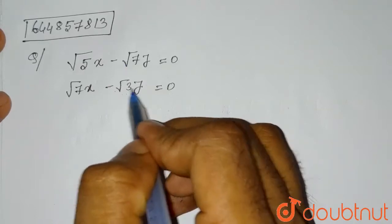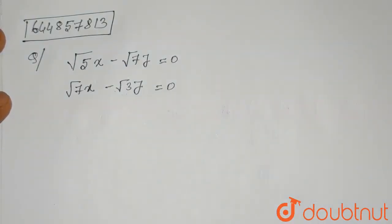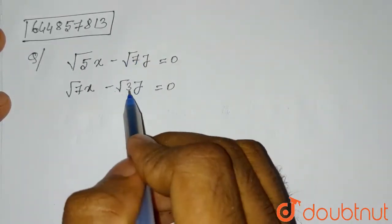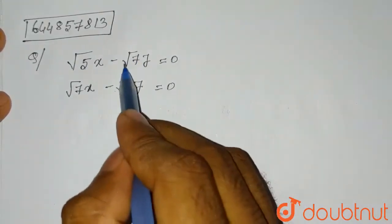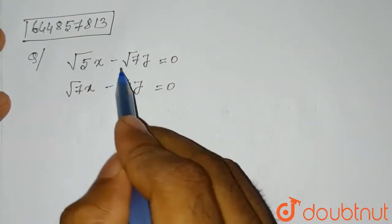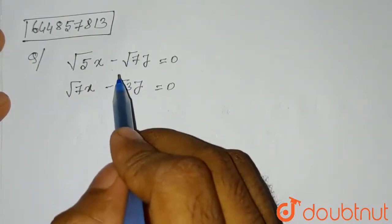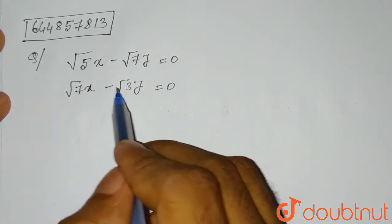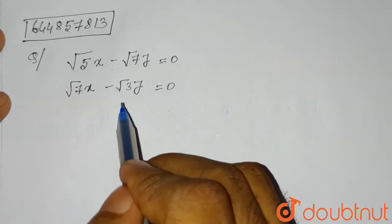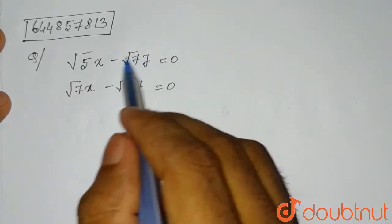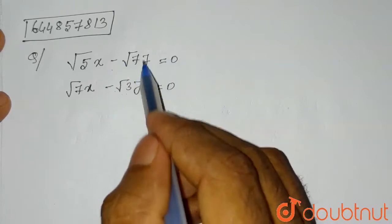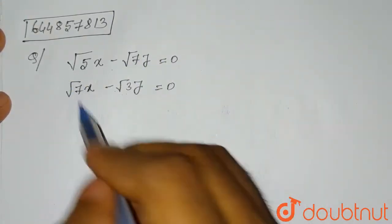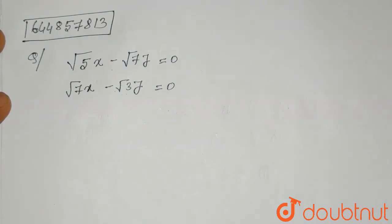Y is minus root 7 and here the coefficient of Y is minus root 3. So we will multiply the first equation with plus root 3 and the second equation with minus root 7. After multiplying with plus root 3, it will be minus root 21. And if we multiply with minus root 7, it will be plus root 21. So the coefficient of Y will be equal but with different signs, then we will add to remove Y. We are left with X only in the equation, then we will find the value of X.